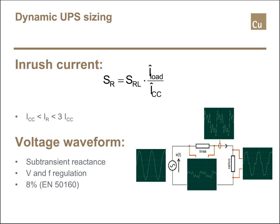Regarding how to limit voltage distortion: looking at the standards, I never found any explicit reference. My suggestion is to limit the THD to the generic allowed value in the public network in Europe — according to EN 50160, approximately 8%. If any kind of load is able to work when fed by the public network with up to 8% voltage distortion, it should work properly also with our dynamic UPS.